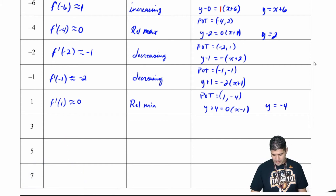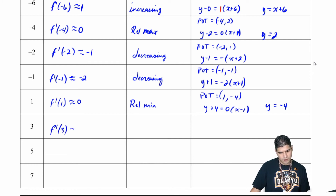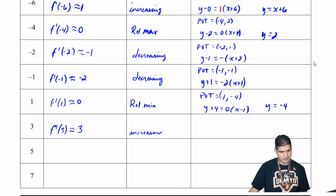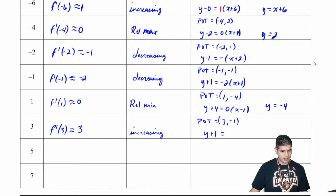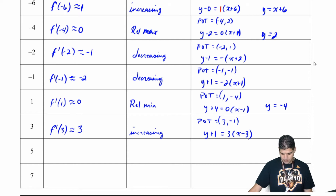At x equals 3, f prime of 3 is approximately 3 and the function is increasing — the graph is going up. My point of tangency is 3 comma negative 1, so the equation in point slope form is y plus 1 equals 3 times x minus 3.